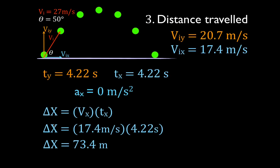Just to point out: the velocity in the x direction is constant, so we can use the simple distance equation. The velocity in the y direction is not constant — it's accelerating, slowing down and then speeding up — so we cannot use that simple equation to figure out the height in the y direction; we have to use the kinematic equation. So there we go — we did all three things: how high the object goes, the total time in the air, and the distance the object travels — in about 10 minutes or less.